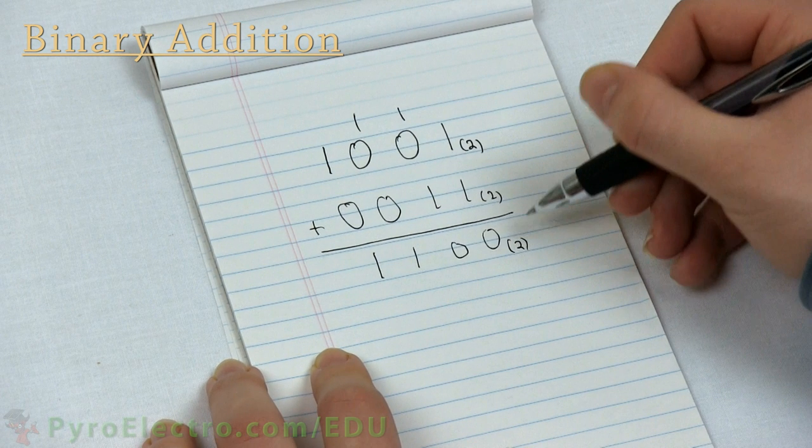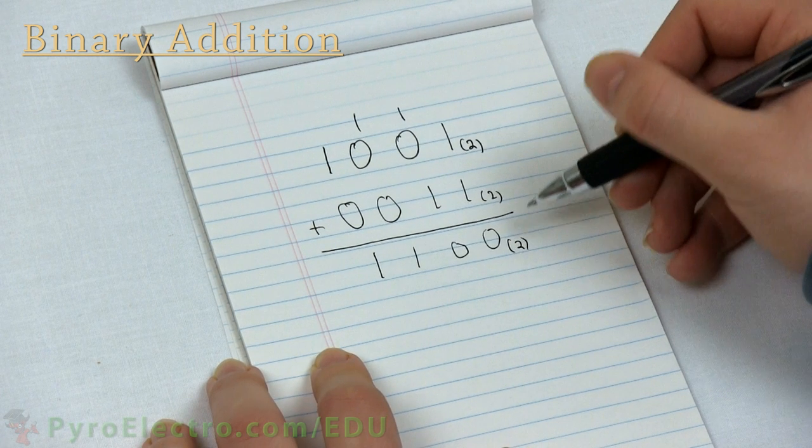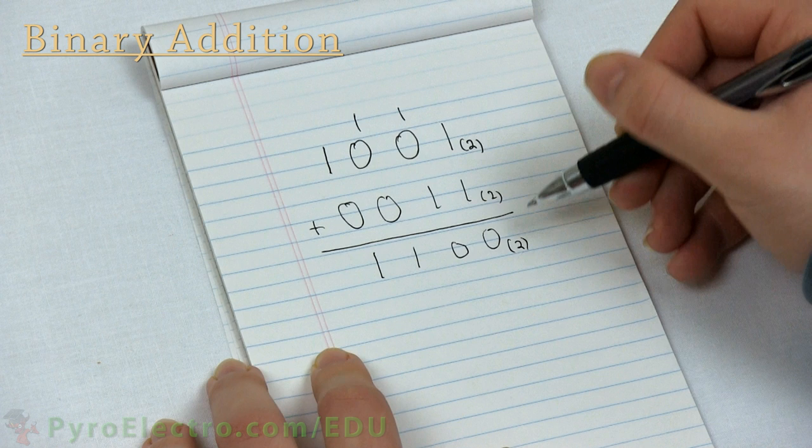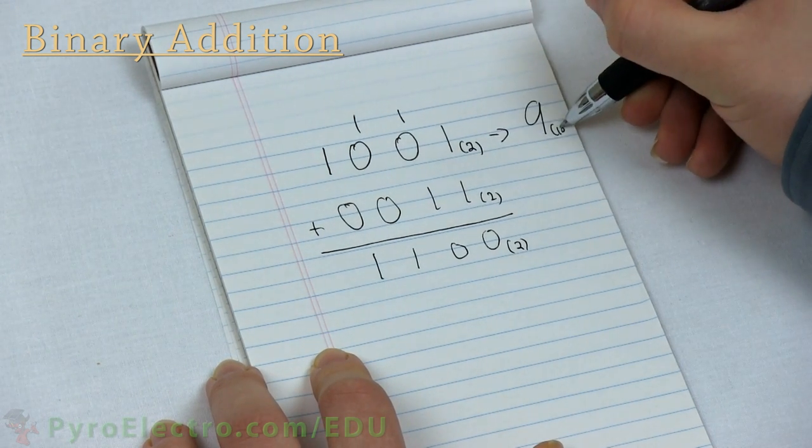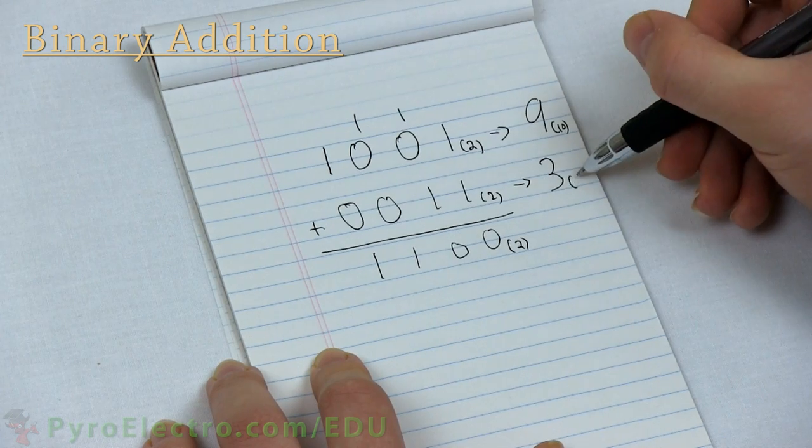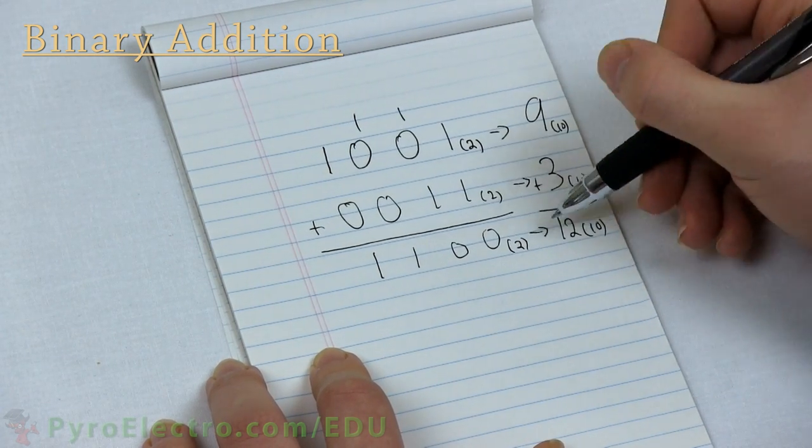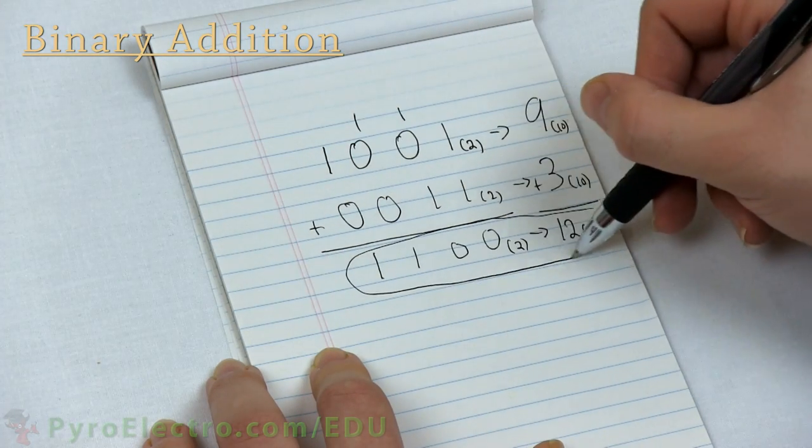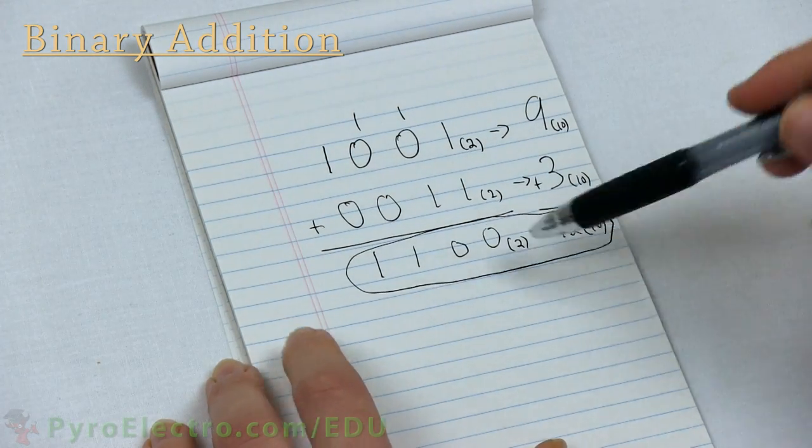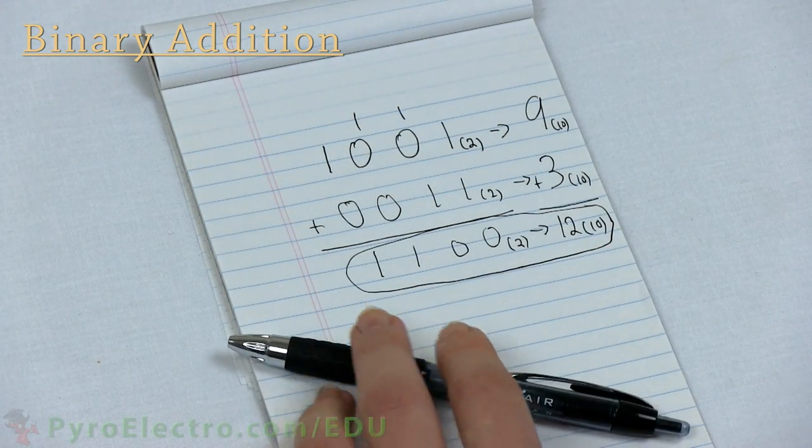So the answer is 1100, which, if we convert everything over to decimal and perform the addition, 9 plus 3 is indeed 12. Feel free to convert the four-place binary number 1100 to decimal to double-check our math.